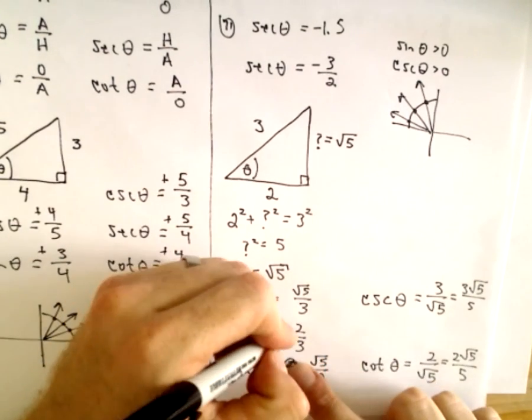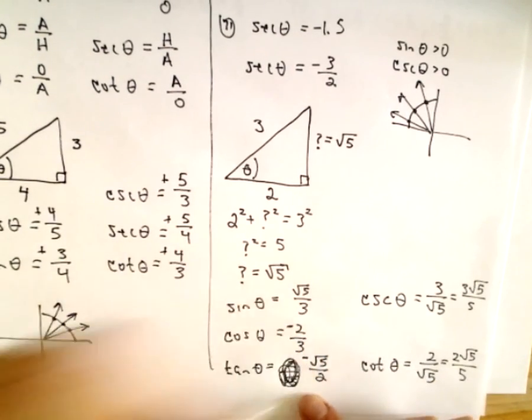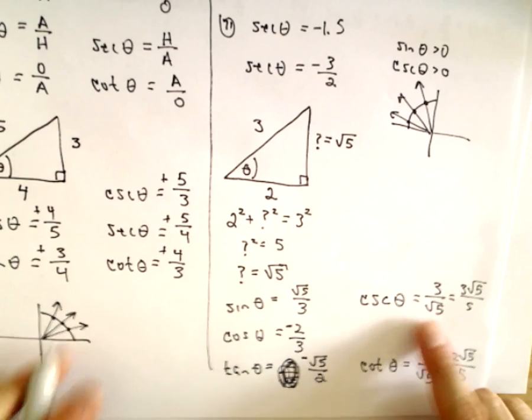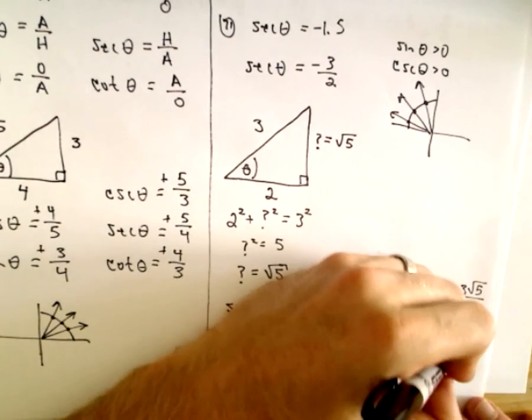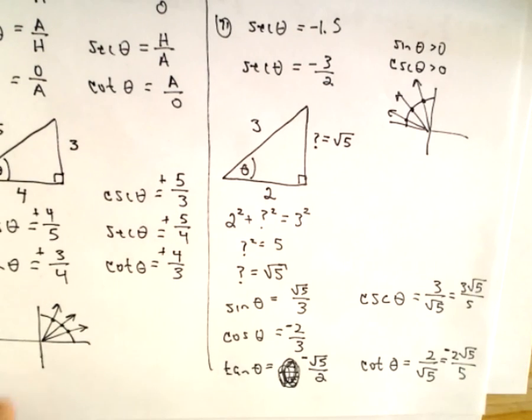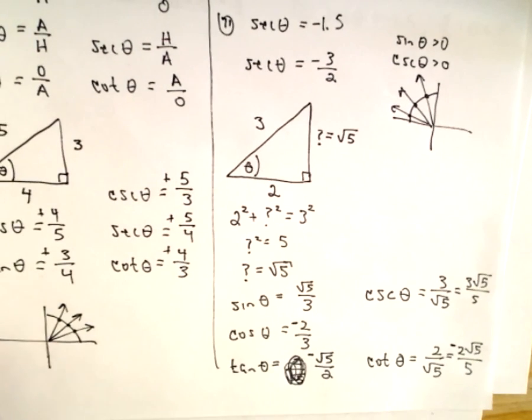So sine is positive. Cosine would be negative. Tangent would be negative. Cosecant is positive. Cotangent is also going to be negative. So we've now got the other five values.